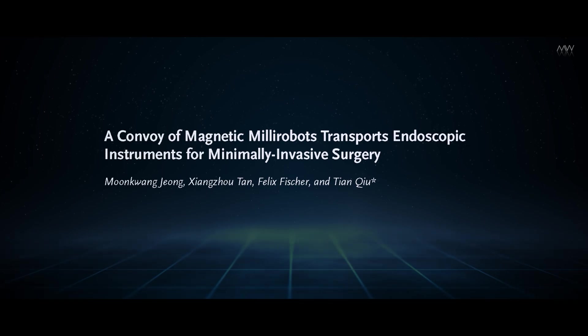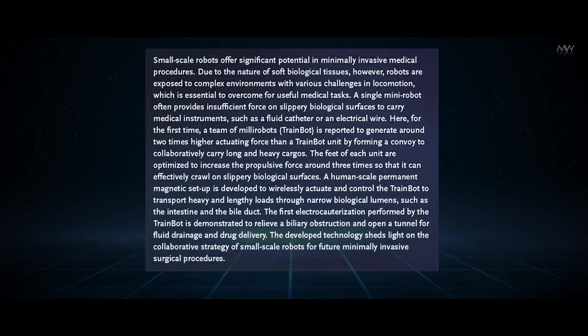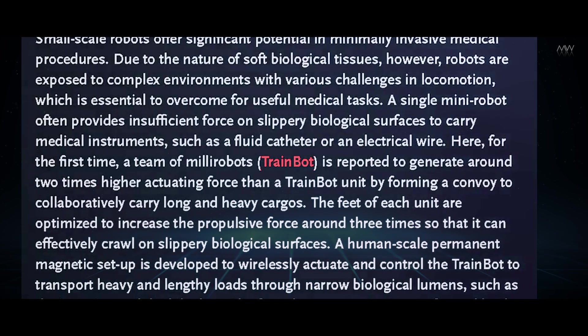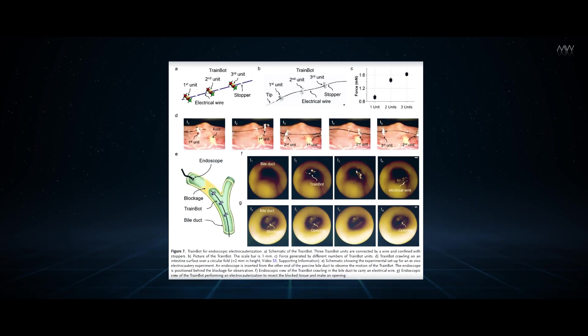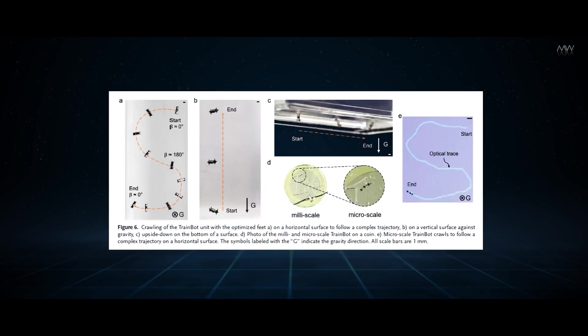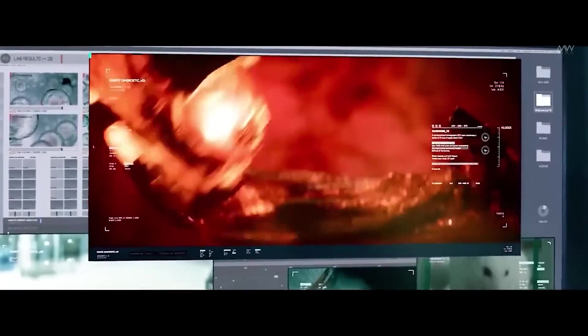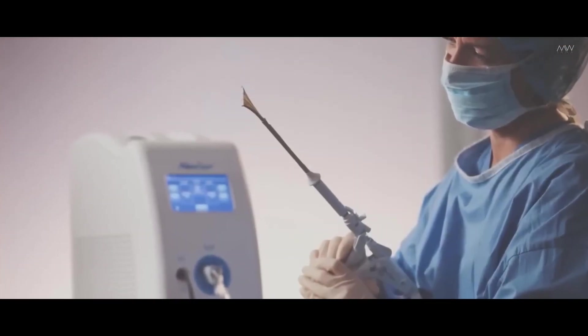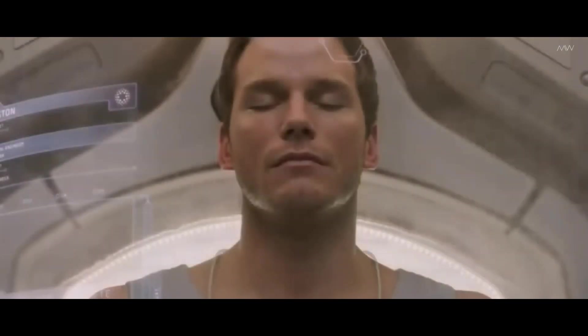And while that unfolds, a convoy of microbots is helping surgeons do something even more sci-fi: perform delicate operations without making incisions. They're called train bots - miniature robots just three millimeters long, linked together like a flexible train. They're guided by magnets, and their tiny molybdenum legs grip the soft tissue inside the human body. They don't slice through, you don't even need to make new opening. They wind their way through your body's natural curves to reach organs once thought unreachable without risk. A catheter or electrode rides along this robotic train, finally delivering surgical tools to places where no single device could reach before.